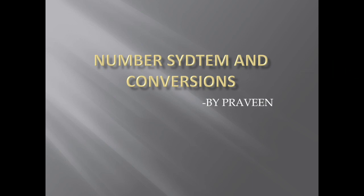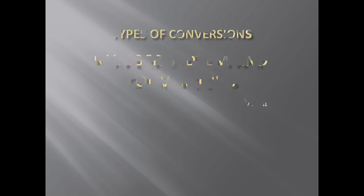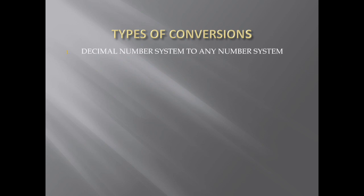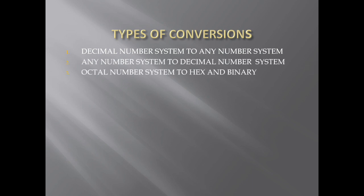We have four types of conversions. First, decimal number system to any number system. Second, any number system to decimal number system. Third, octal number system to hexadecimal and binary number system. Fourth, hexadecimal number system to octal, decimal, and binary number system.